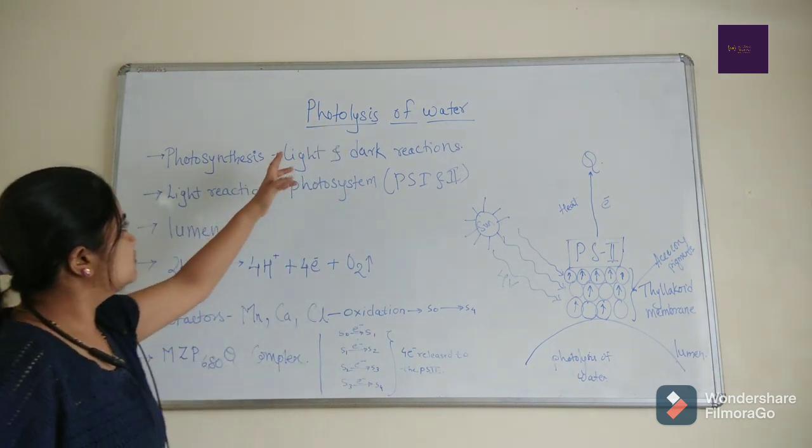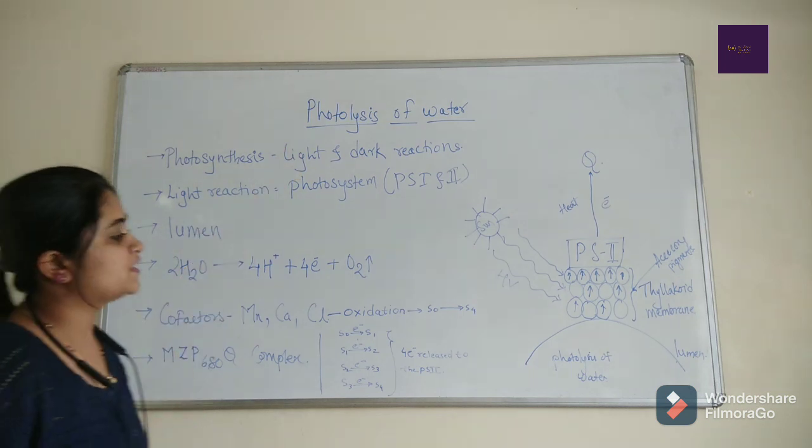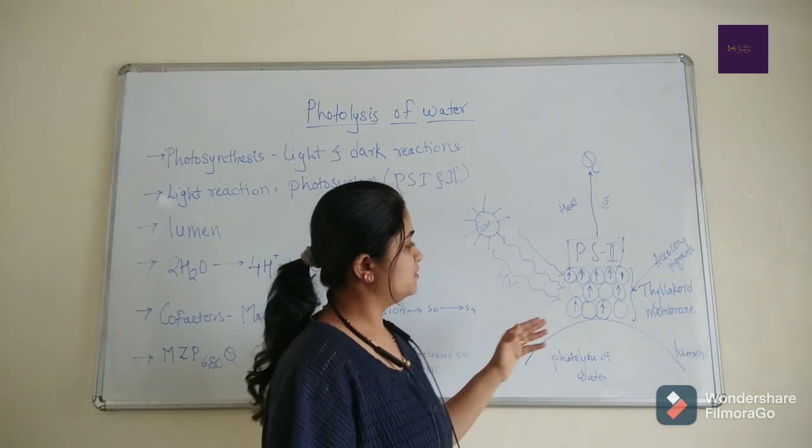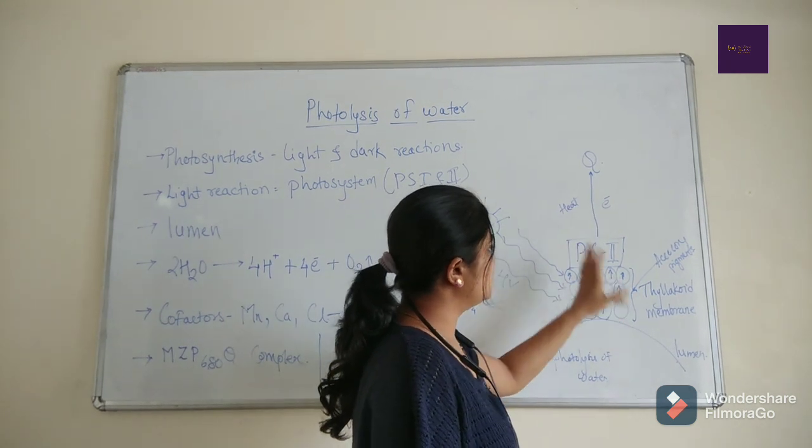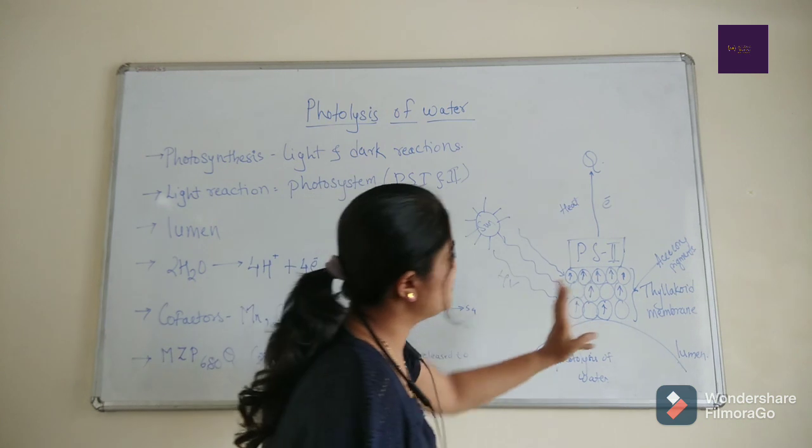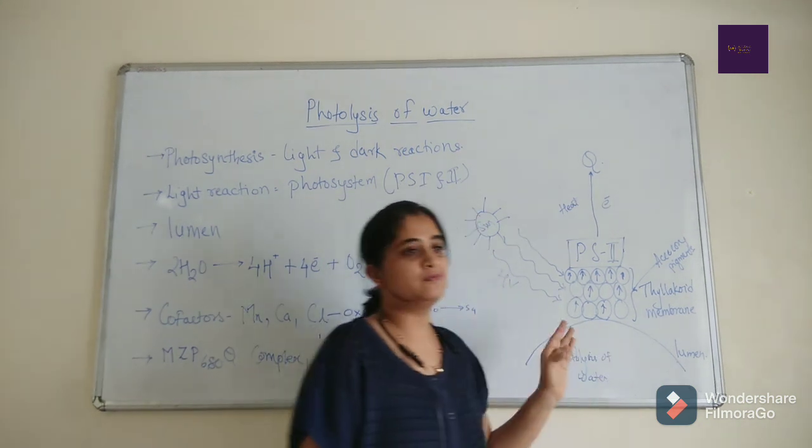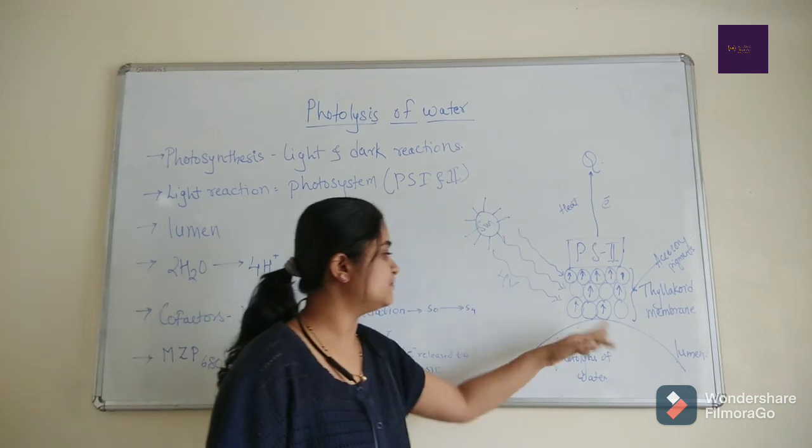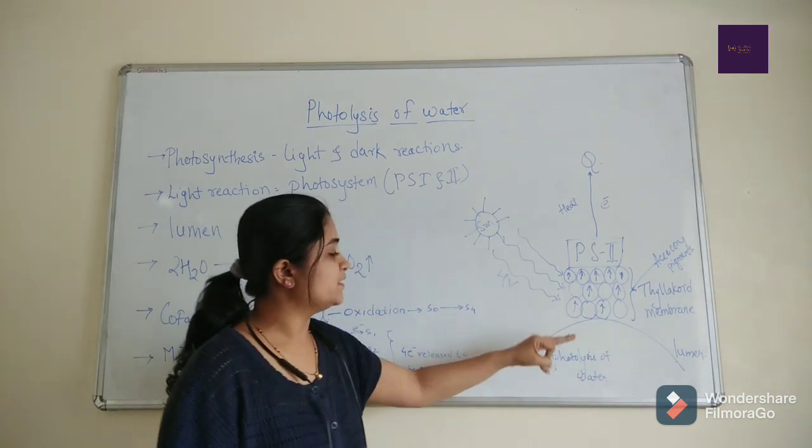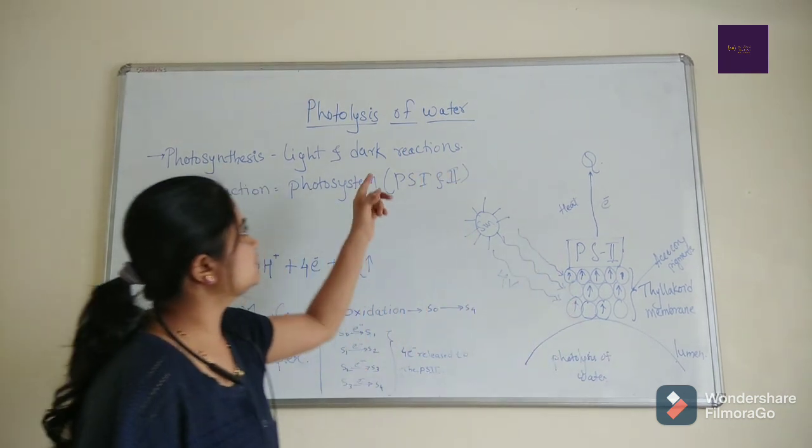The photo-oxidation of water - what is the site? The site is the lumen. In the thylakoid membrane, there is photosystem PS1 and PS2, and next to the thylakoid membrane, means inner side of the thylakoid membrane, there is a part of the lumen. And in that, the photo-oxidation of water takes place.